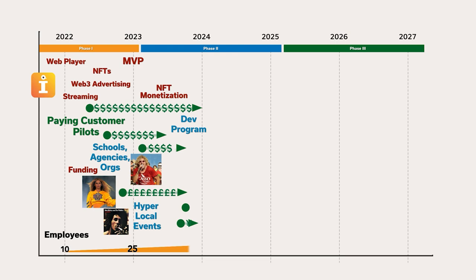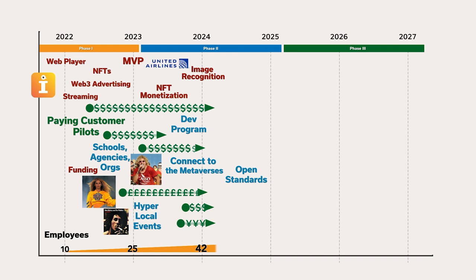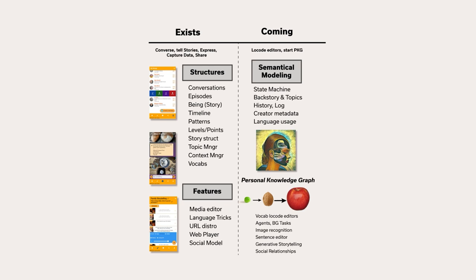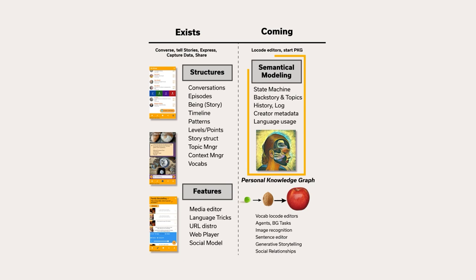We can also start a professional developers program so that our creators can start making money. Phase 2 is when our company really starts to grow. Heading into 2024, we'll add image recognition and start to promote open standards around our file format and ways to connect to the metaverses. Every creator will have their own personal knowledge graph, which will grow over time as they upload and contribute content, share conversations, and provide context. This personal knowledge graph will be totally owned, controlled, and edited by creators.